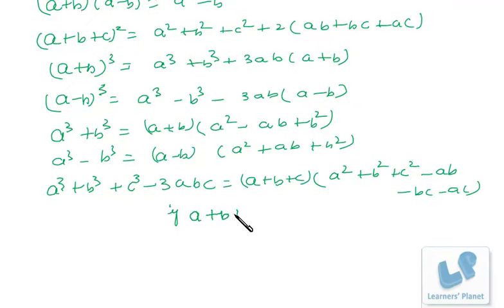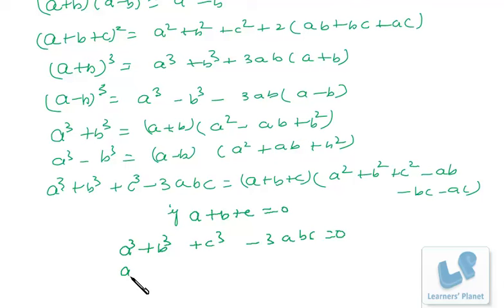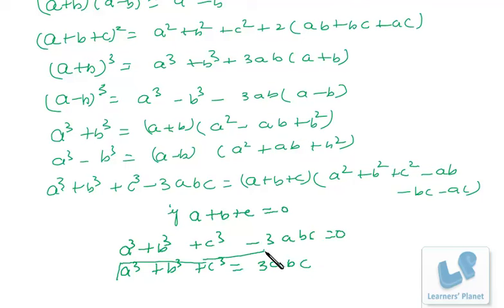In this identity, if a + b + c = 0, then the entire right-hand side is multiplied by 0, making it 0. So if a + b + c = 0, then a³ + b³ + c³ - 3abc = 0, which means a³ + b³ + c³ = 3abc. That is an important result.